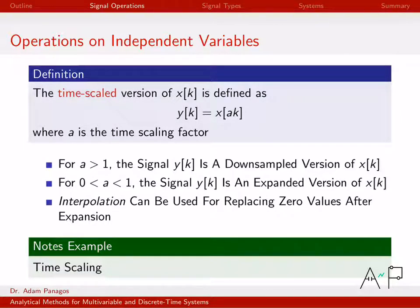Depending on the value for a, different things happen. So if a is a number larger than 1, we say that we are downsampling the signal. For values of a larger than 0 and less than 1, we call that an expanded version of x of k. So the value of a, whether it's less than 1 or larger than 1, really determines what y of k ends up looking like dramatically, whether it's downsampled, a shrunken version, or whether it's an expanded signal, a stretched out version. Let's go ahead and look at the time scaling example now.